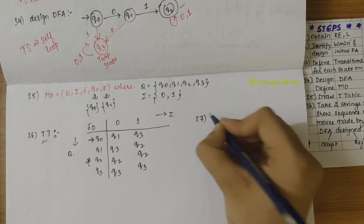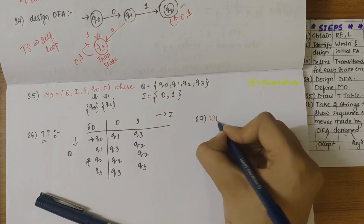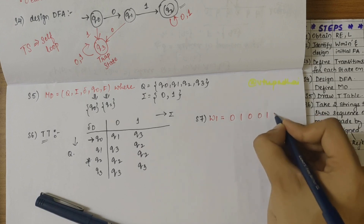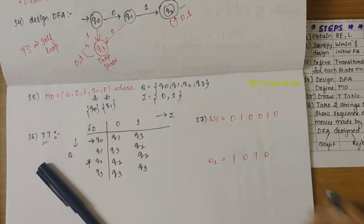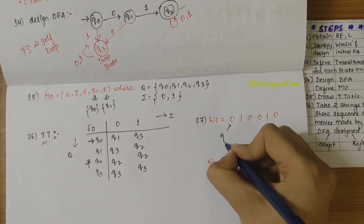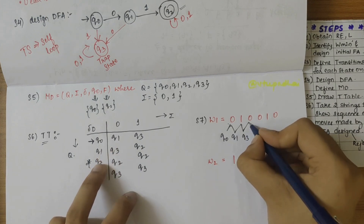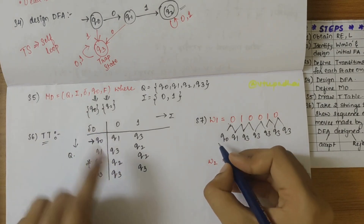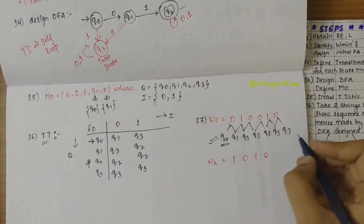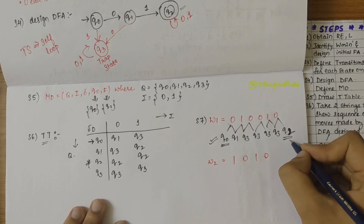The next step is to take two strings to show the sequence of moves made by the DFA — one accepted, one rejected. Let w1 = 0 1 0 0 1 0. Since it starts with zero-one, it should be accepted. Trace: q0 on 0 → q1, q1 on 1 → q2, q2 on 0 → q2, q2 on 0 → q2, q2 on 1 → q2, q2 on 0 → q2. It ends at q2, which is the final state — accepted.